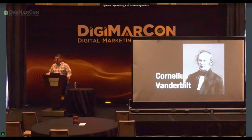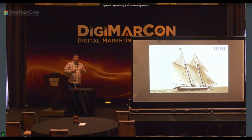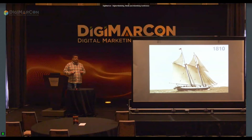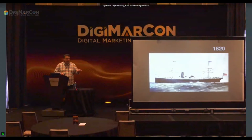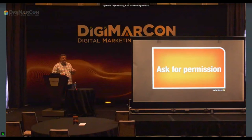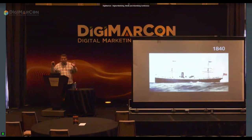In 1810, Vanderbilt ran a schooner company — basically a taxi driver ferrying passengers across New York Harbor. New technology comes along in 1820: the steamship. You needed a license from the state of New York to have a steamship line, but like any good marketer, rather than asking for permission, he decided to ask for forgiveness. He had a steamship, ran a more efficient line than anyone else, put them out of business, and eventually grew into a major ferry company all up and down the East Coast by 1840.